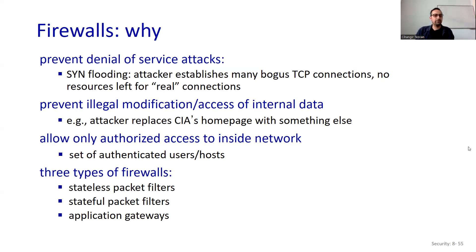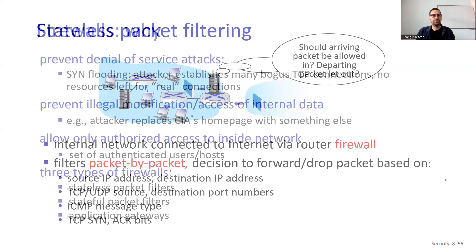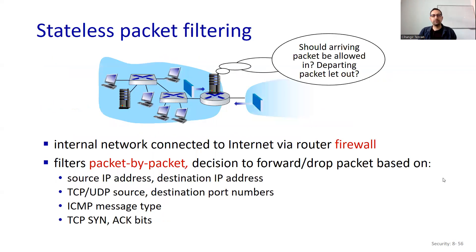There are three types of firewalls: stateless packet filters, stateful packet filters, and application gateways. Stateless packet filtering decides whether an arriving packet should be allowed in or a departing packet let out.